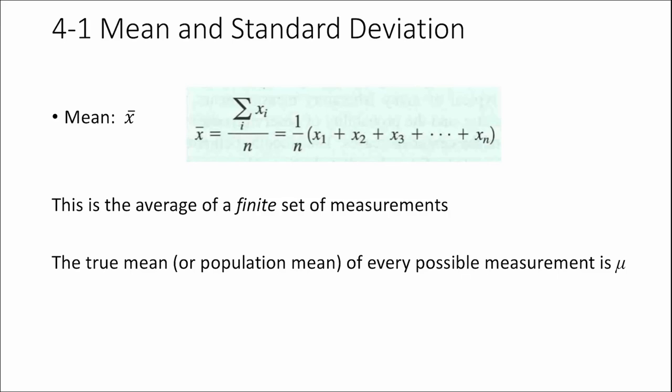We'll start with the simple stuff. You've done this before. This is mean, or the average, and there's a fancy formula here, but you know how to do this. Do note that this mean, when we write it with the X with the bar on top, that's for a finite set of measurements. It's not all the measurements in the world.